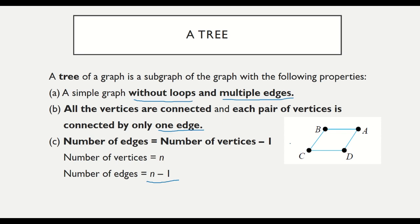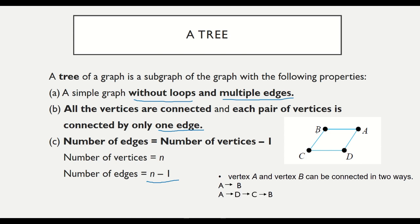This simple graph is not a tree because vertices A and B can be connected in two ways: directly from A to B, or via A to D, D to C, and C to B. Also, we have four vertices and four edges — it doesn't match the property, since vertex C has two edges, vertex B has two edges, and A and D are each connected with two edges.